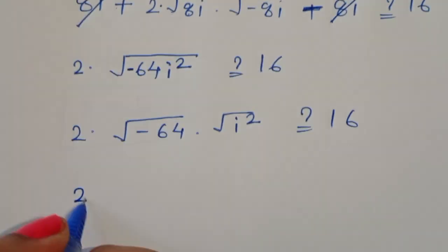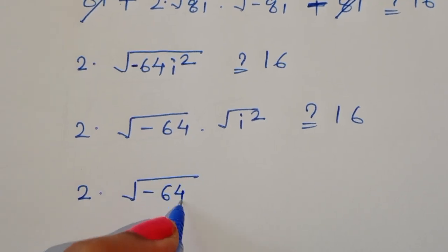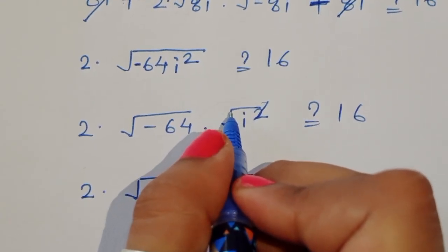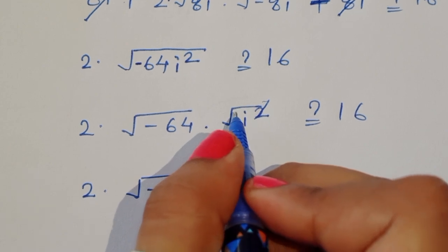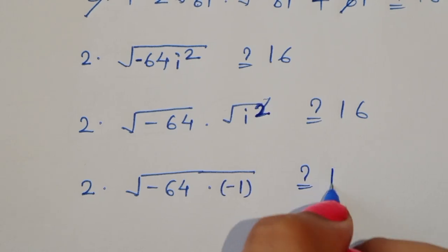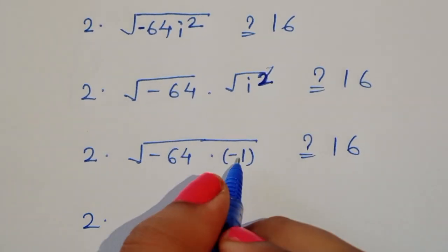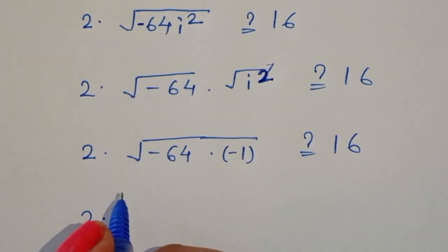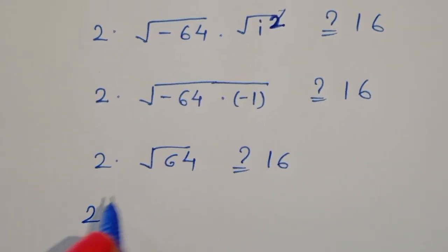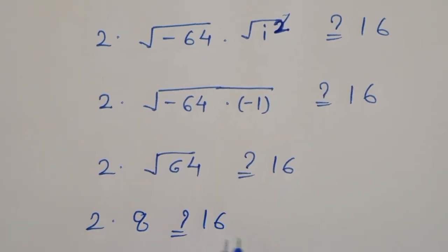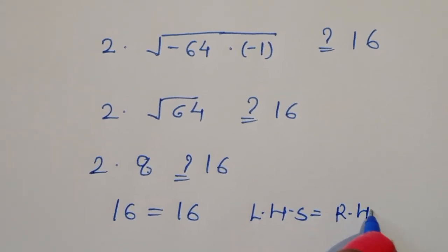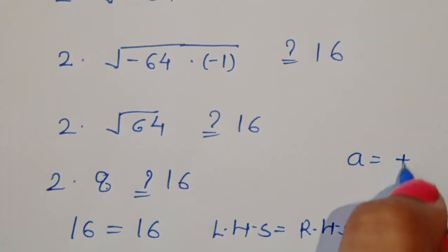The 8i and −8i cancel. Then 2 × √(−64i²): since i² = −1, this gives 2 × √64 = 2 × 8 = 16. So LHS = RHS = 16. Therefore a = +8i is correct.